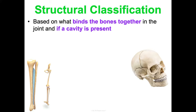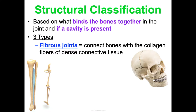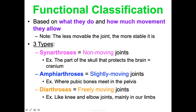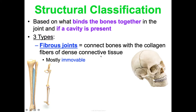Structural classification is based on what is binding the bones together and whether a joint cavity is present. There are three types. Fibrous joints connect bones with collagen fibers of dense connective tissue and are mostly immovable. For example, the bones of the skull are held together by fibrous joints called sutures. Since they're immovable, most are considered synarthrosis — there is overlap between structural and functional classification.